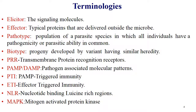First, terminology related to genetics of host plant disease resistance. Elicitors are the signaling molecules. Effector molecules are the typical proteins that are delivered outside the microbe. Pathotype: these are the population of a parasite species in which all individuals have a pathogenicity or parasitic ability in common. Biotype: the progeny developed by variants having similar heredity. PRR: these are pathogen recognition receptors.